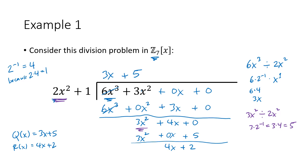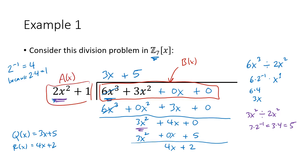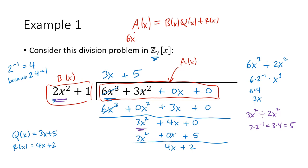To clarify: the dividend — the thing we divided into — is a of x, and the divisor — the thing we divided by — is b of x. We want to verify that a of x equals b of x times q of x plus r of x. In this case, 6x cubed plus 3x squared should equal 2x squared plus 1, times 3x plus 5, plus 4x plus 2. If you work that out in Z7 brackets x, it does in fact check out.